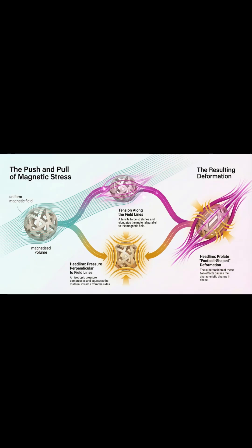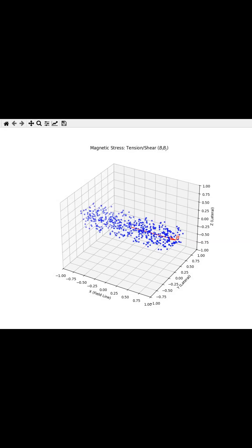Finally, you've got the compression. This comes from the pressure term, and it acts like a uniform squeeze, pushing the material inward, but perpendicular to those field lines. So you get this stretch along the field and a squeeze across it, all at once. And that's what creates that classic football-shaped deformation.